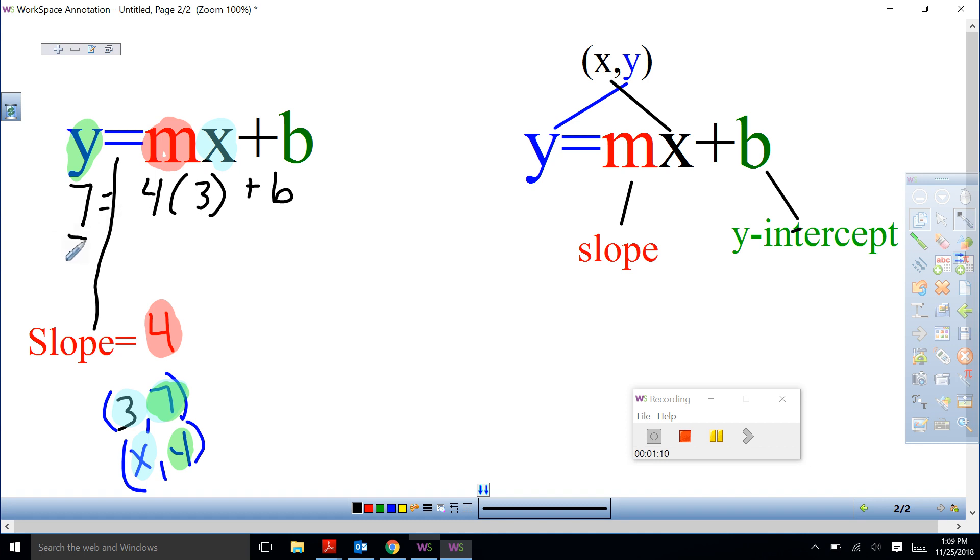So this is 7 equals 4 times 3 is 12 plus B. We're going to do a one-step equation and get B by itself. To do that, I have to minus 12 from both sides, so B equals negative 5.